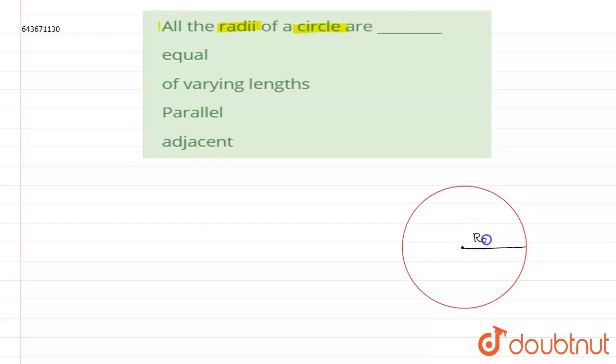Now, if it is more than one, then it is called radii of the circle. So these are the radii of the circle.